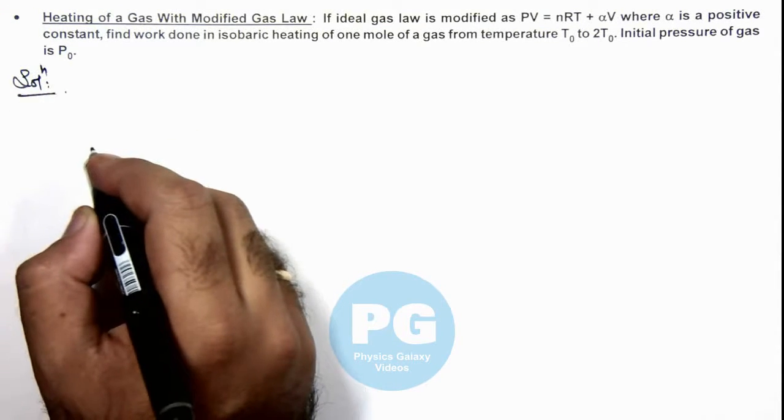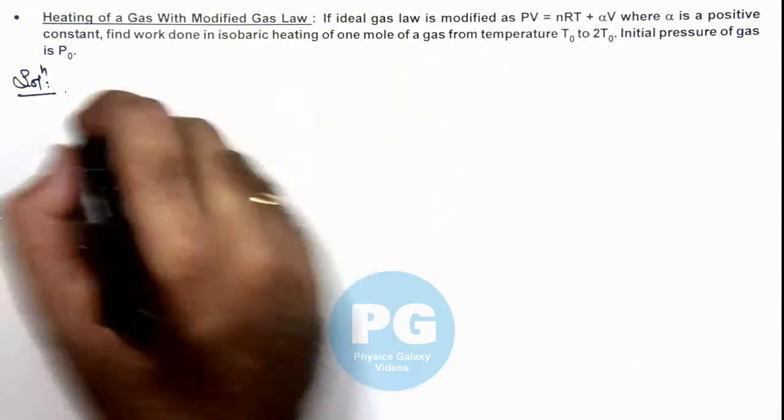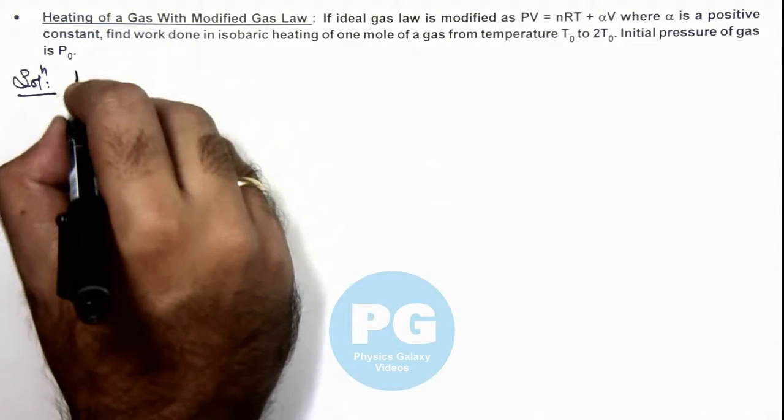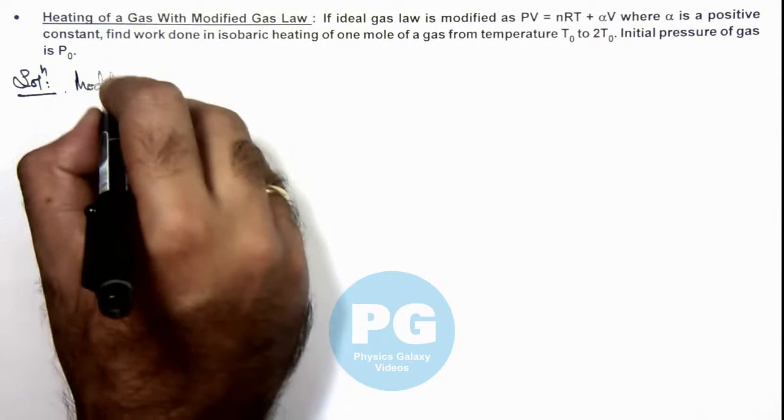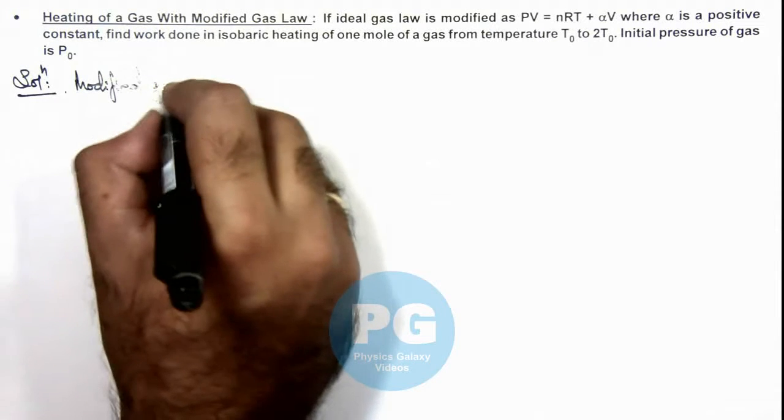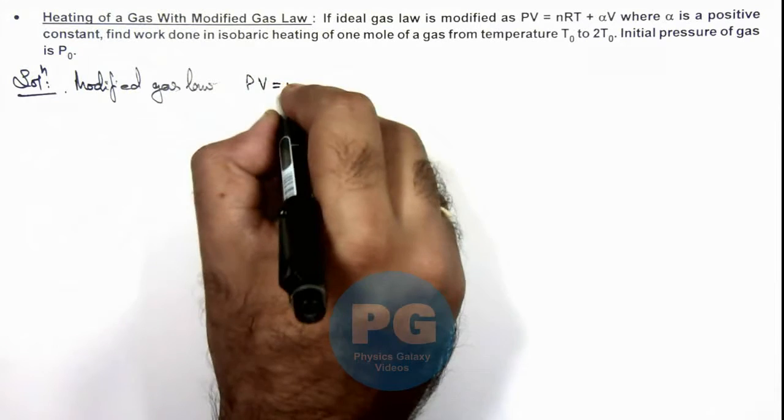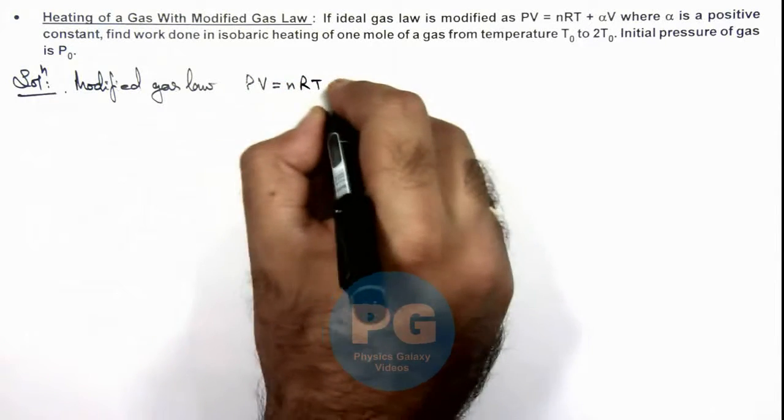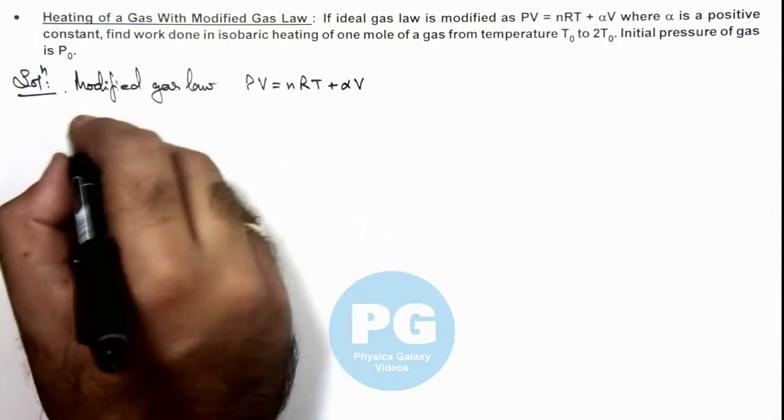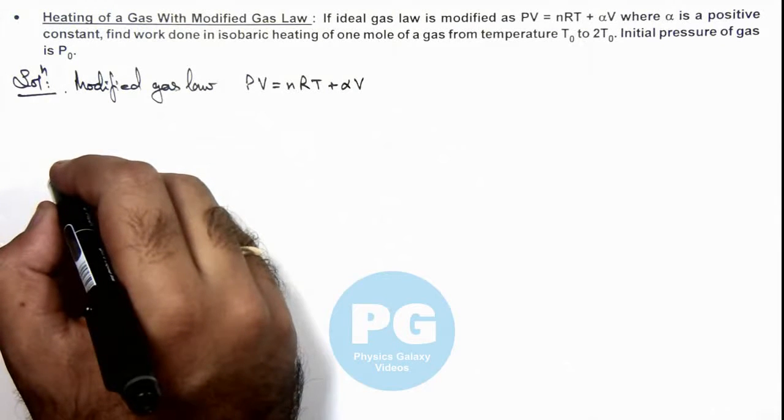Now in this situation, if we differentiate this gas law which is given to us, the modified gas law is given as PV = nRT + αV. So if we differentiate it...